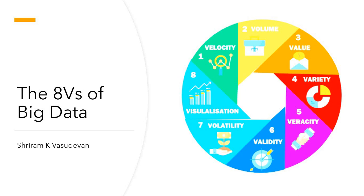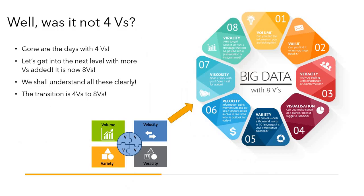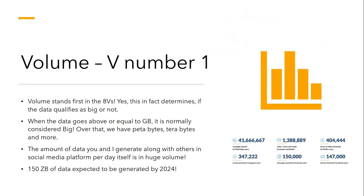Hello friends, welcome back. In this session we are going to understand the eight V's, which are the characteristics of big data. It was earlier called four V's, then it became five V's, and now it is eight V's. That transition has really happened — from the four V's, that is volume, velocity, variety, and veracity — to the eight V's. We have added four more V's to it.